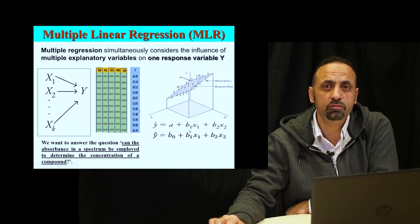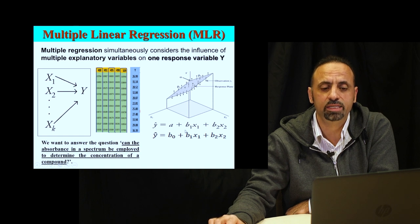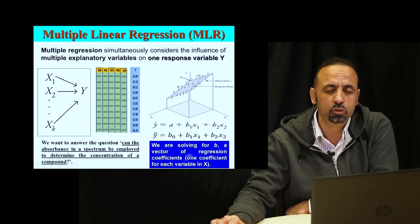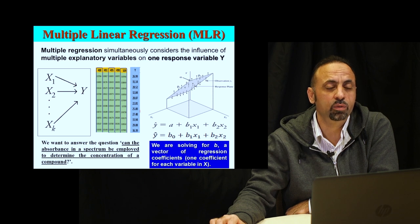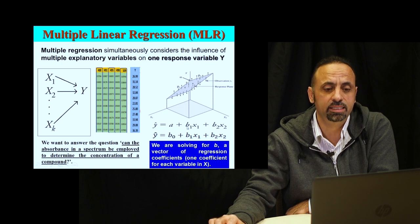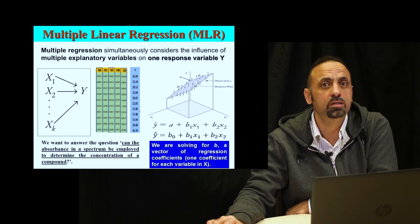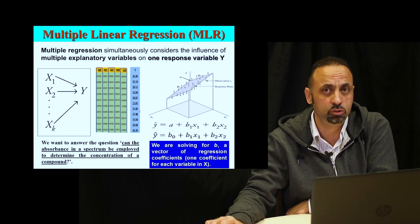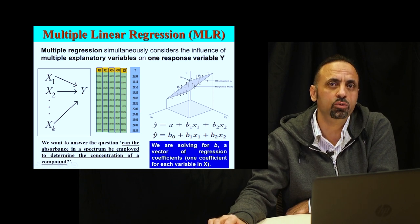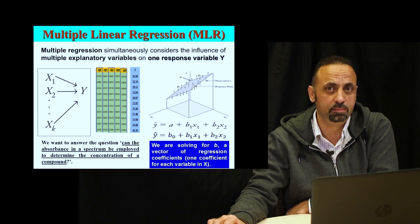In the univariate case, I have only one variable and one slope or coefficient. But with two variables, I should have two regression coefficients and one constant as an intercept. So we need to solve for the B coefficients. Once we have spectral data and concentration, we obtain the regression coefficients — the intercept and the constants multiplied by each spectral data. We need to know B₀, B₁, B₂, and so on — the beta coefficients used for future unknown samples.